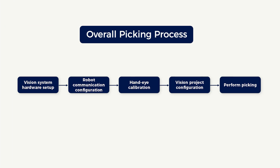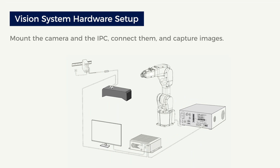Here are all the steps for picking housings. This collection of tutorials will walk you through these steps one by one. First of all, vision system hardware setup is an introduction to how to mount the camera and the IPC, connect them, and capture images using the camera.